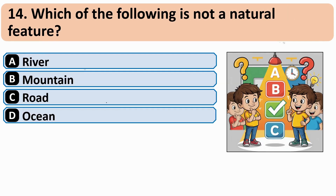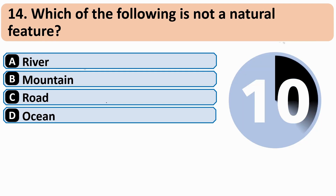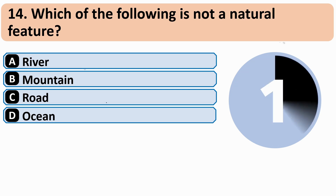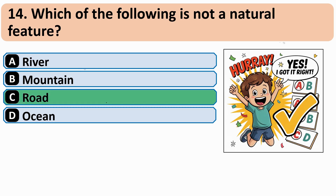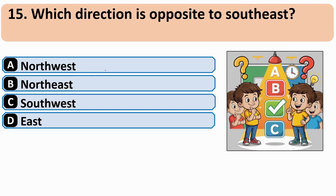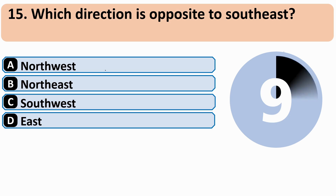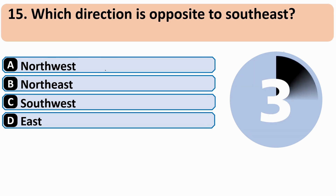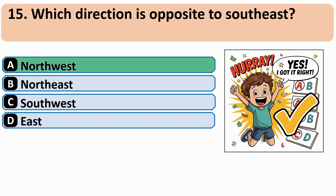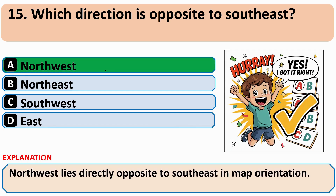Which of the following is not a natural feature? Which direction is opposite to south-east? The correct answer is A — north-west.